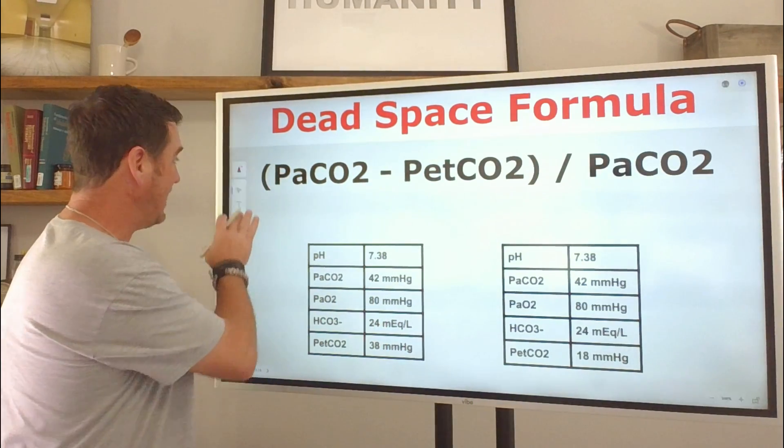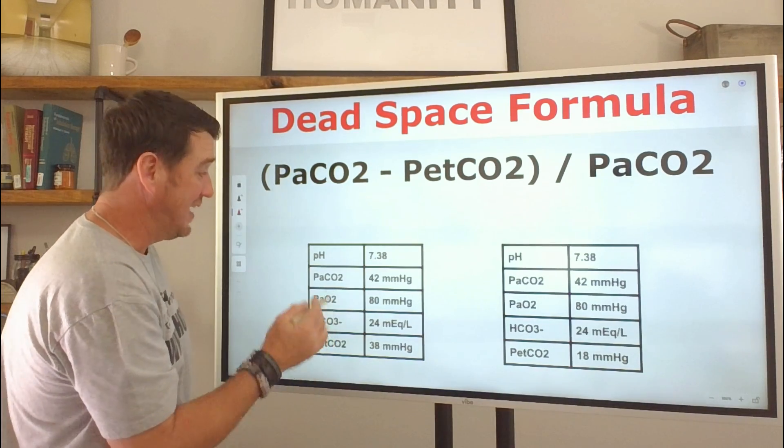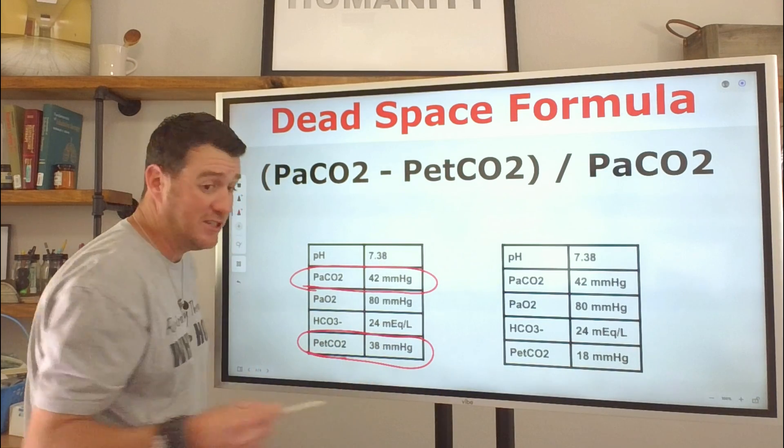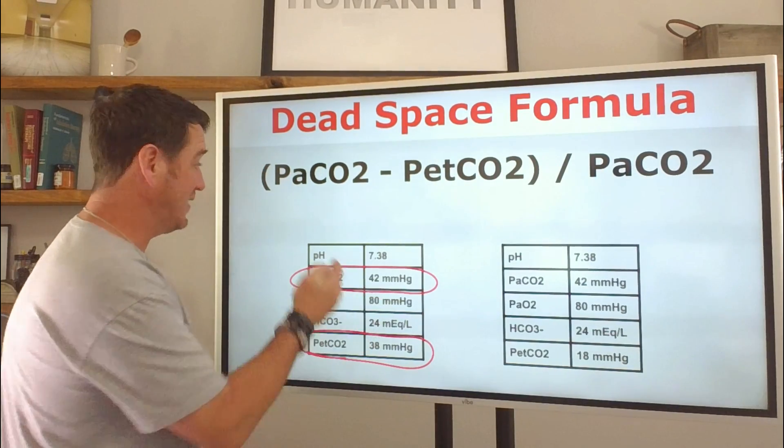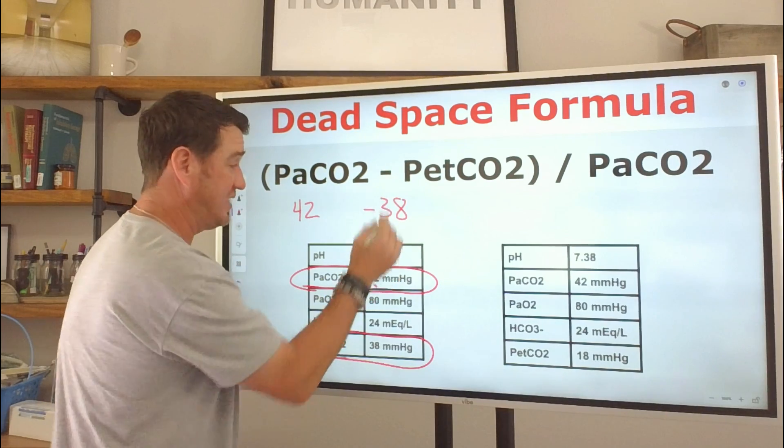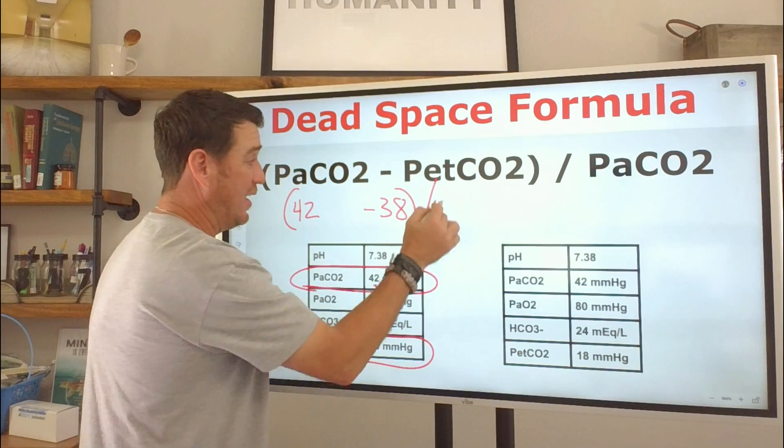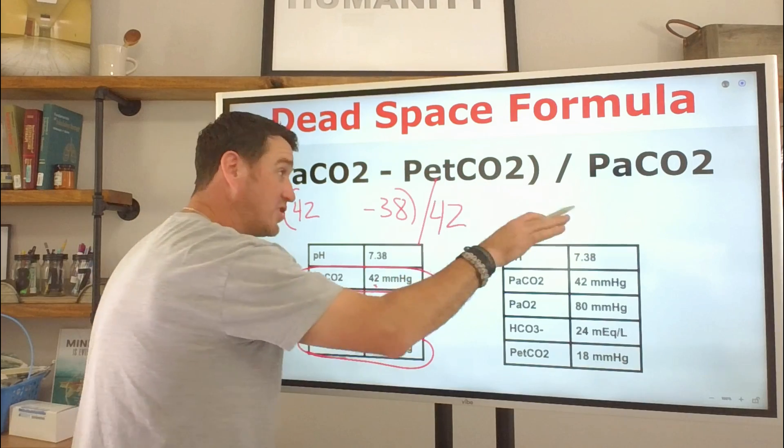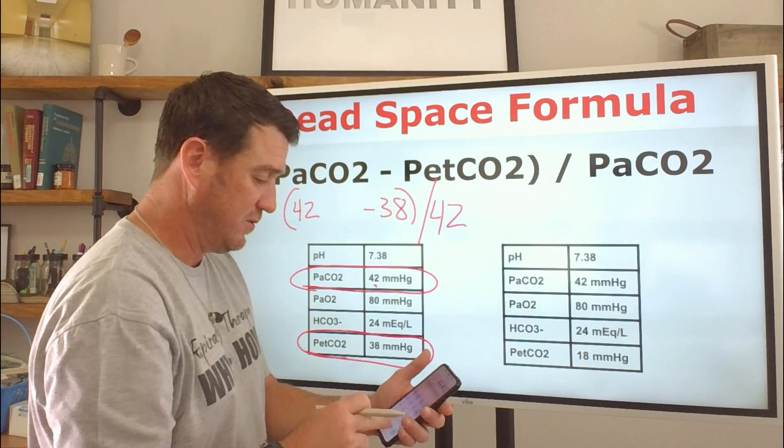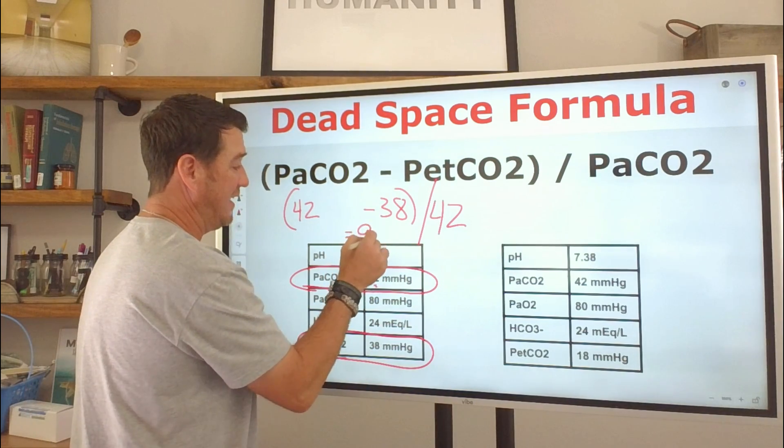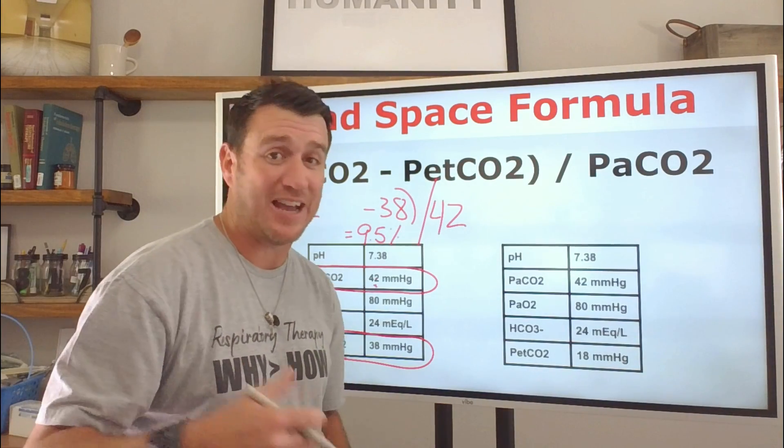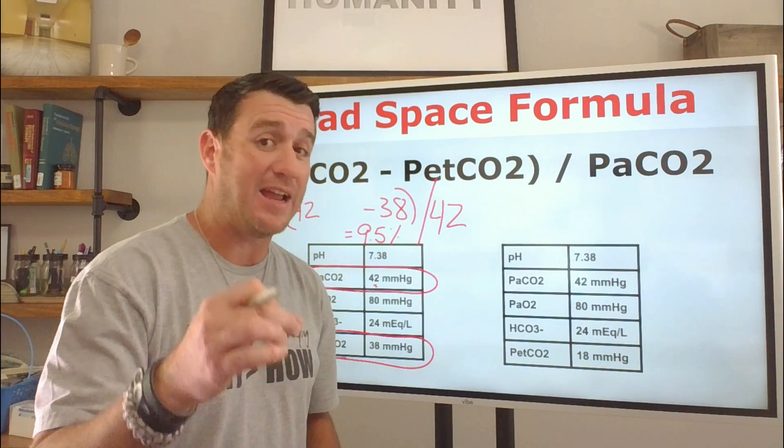Now, here's how it looks. When we look at our values that we need, we realize that all we need from this formula is our PaCO2 and our end tidal CO2. Now, when we do this formula, what we find is that it's very simple. We do 42 because our arterial CO2 is 42 minus our end tidal CO2. So 42 minus 38 divided by 42. Why? Because that's our PaCO. That's our arterial CO2 content. So we do 4. 42 minus 38 is 4. 4 divided by 42. That equals 9.5%.